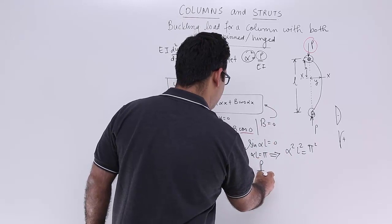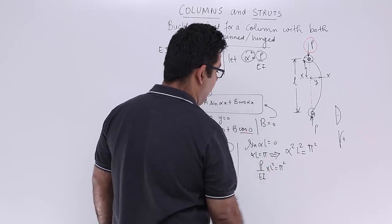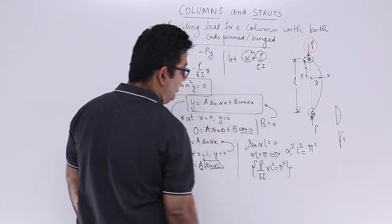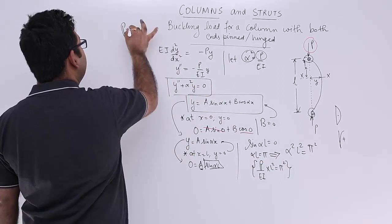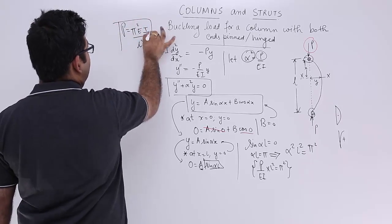P upon EI into l square is equal to pi square. From this expression I can find out the value for p. So p will be equal to pi square EI upon l square.